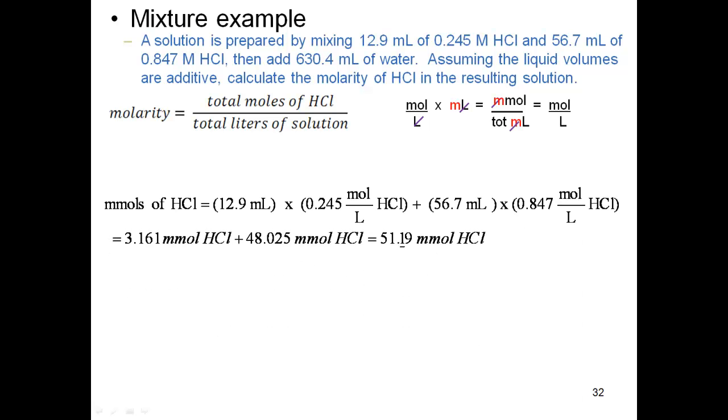Going back to our problem, I need to figure out my millimoles of HCl. I follow where the HCl is coming from. We have HCl coming from our 12.9 milliliters of 0.245 molarity, and I have 56.7 milliliters of 0.847 molarity of HCl. I can multiply the volume times molarity of each one of those and figure out my millimoles of each component.